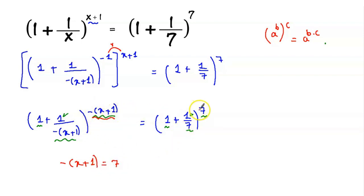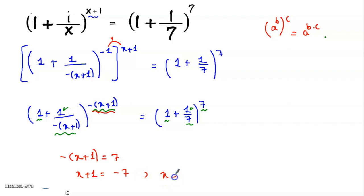Minus x plus 1 equal to 7. So x plus 1 equal to minus 7. x equal to minus 7 minus 1 equal to minus 8. And this is the final answer.